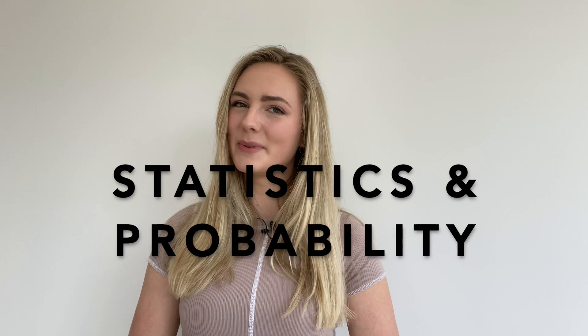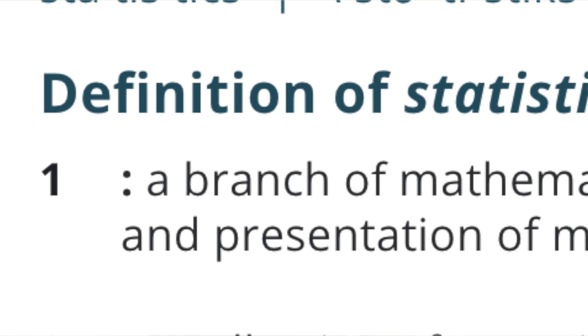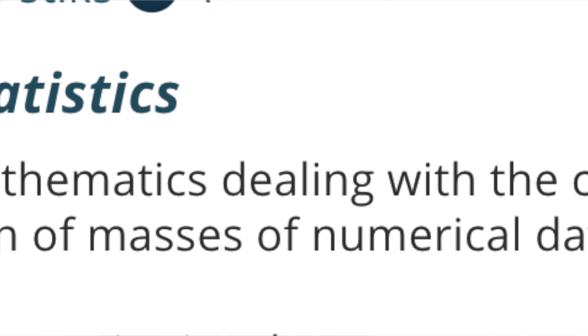Let's jump into the subfield overviews, starting with statistics and probability. The reason I'm starting with this one is because it's the most important. I'm just going to say it: if you hate statistics, data science isn't a good option for you. You need to have a strong grasp on statistics and basic probability in order to understand how to properly process and interpret data before you can make any magic from it. Statistics is defined by Merriam-Webster as the branch of mathematics dealing with the collection, analysis, interpretation, and presentation of masses of numerical data. In other words, we use statistics to extract insights and draw conclusions from data.